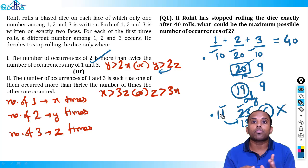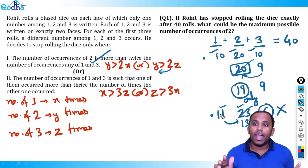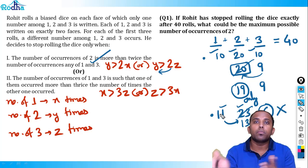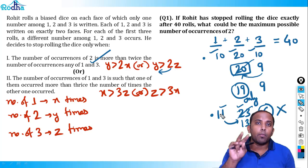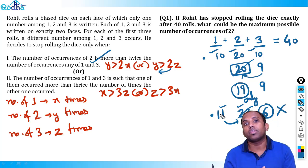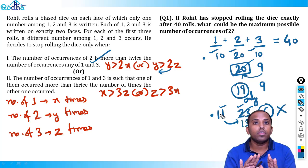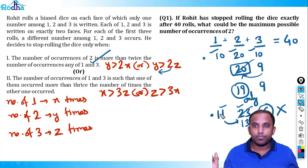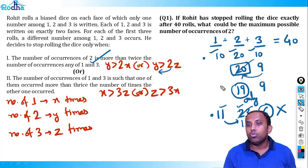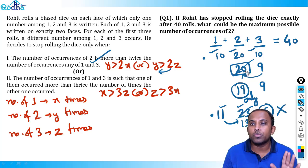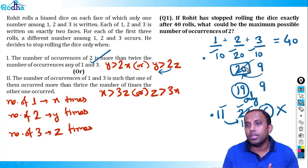Now let's move to question 2. In the previous question, the number of times 1 occurred is either 12 or 9. So we can mark option D: 12 or 9. This is absolutely clear from the two cases we found.